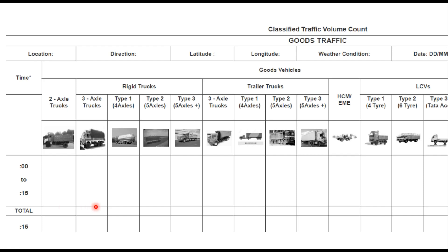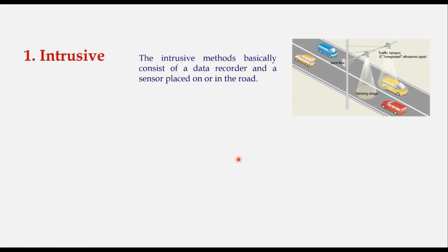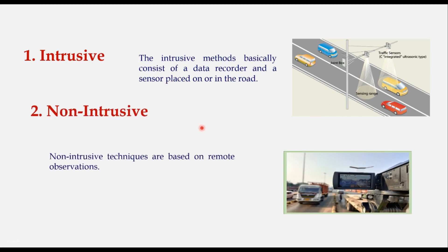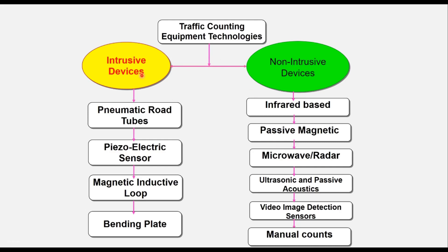In the category of automatic count, there are two broad categories of traffic counting equipment. One is intrusive, which consists of a data recorder and a sensor placed either on the road or inside the road. In intrusive devices we have pneumatic road tubes, piezoelectric sensors, magnetic inductive loops or bending plates. Whereas in non-intrusive devices, we have infrared based, passive magnetic, microwave or radar, ultrasonic and passive acoustics, video image detection sensors, and manual counts.